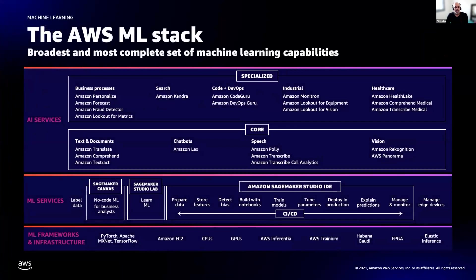AWS AI/ML offering services are stacked into three layers. The top layer contains AI-powered services that developers can access with an API call. For example, you send an audio file and get back the transcription of that audio — no need to know ML.